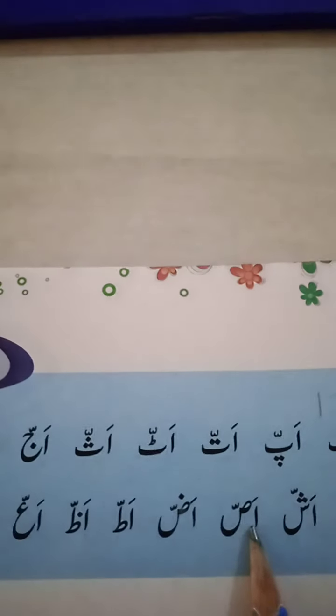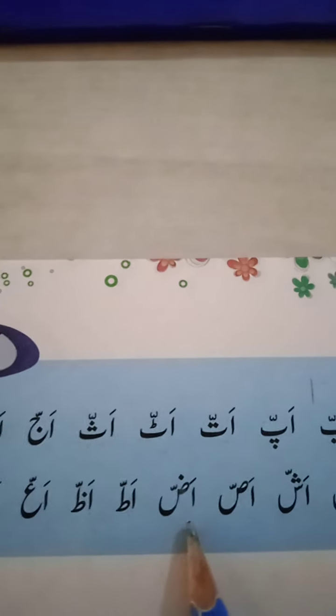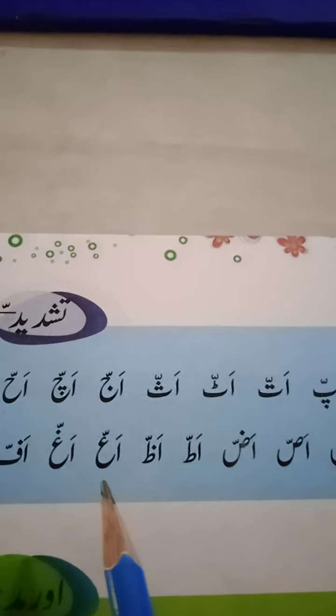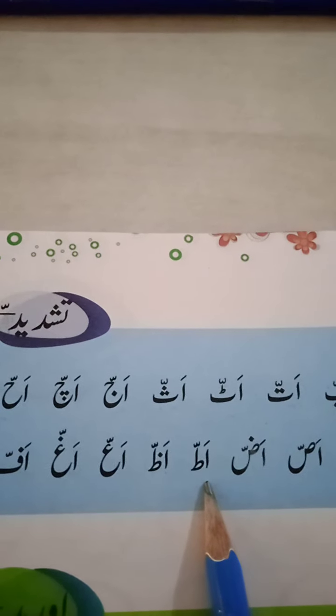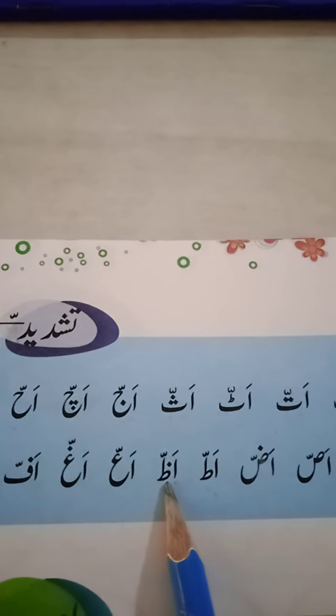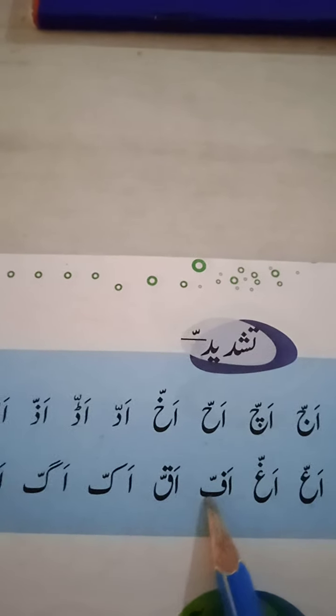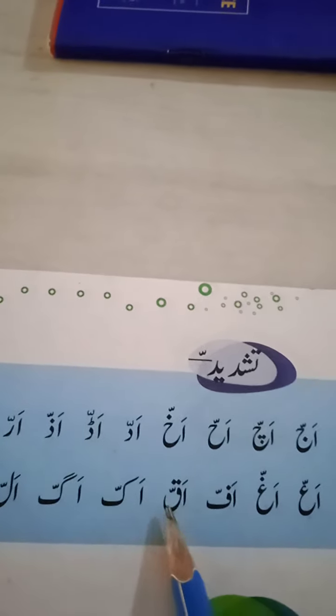Okay students, like this bilkul aisa hi hum log repeat karaenge, aap mere saath padenge taka aapko pardana hai. Alif siin zavar as, siin zavar sa — Assa. Alif so zavar as, so zavar sa. Alif toye zavar as, te zavar ta — Atha. Alif zoy zavar as, zoy zavar za — Azzah. Alif en zavar a, en zavar a. Alif fe zavar af, fe zavar fa — Affa. Alif ka ev zavar a, ka ev zavar ka — Okay friends.